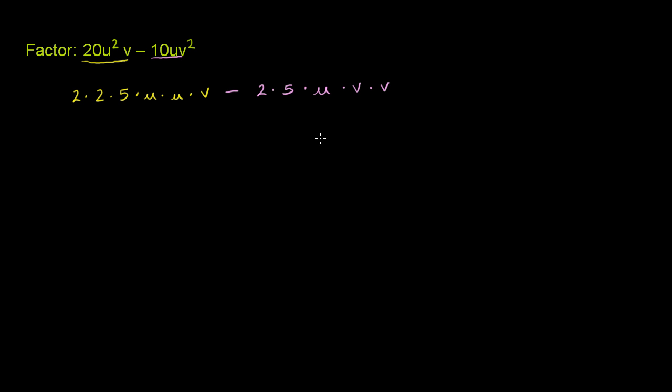Then we have 1u times v times v. That's what v squared is. Now what's the greatest common factor of these two terms? Let's see. They both have 1, 2.